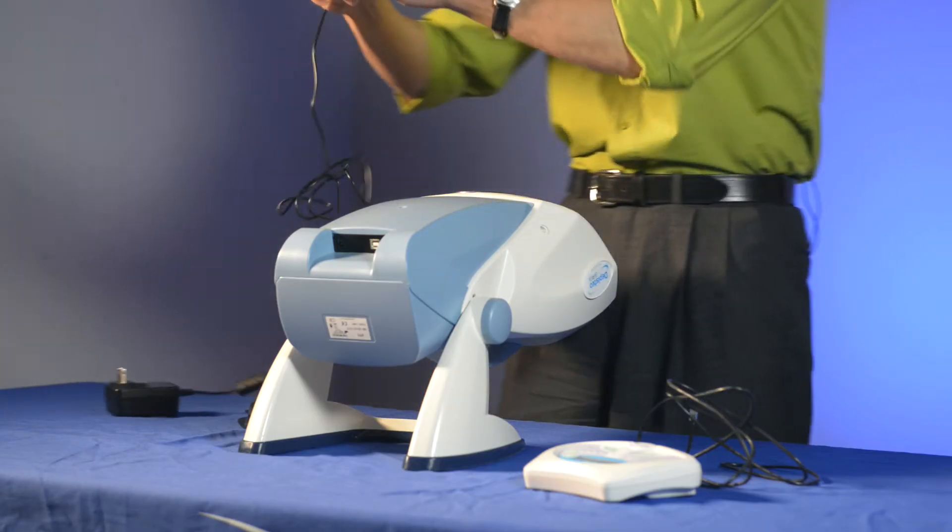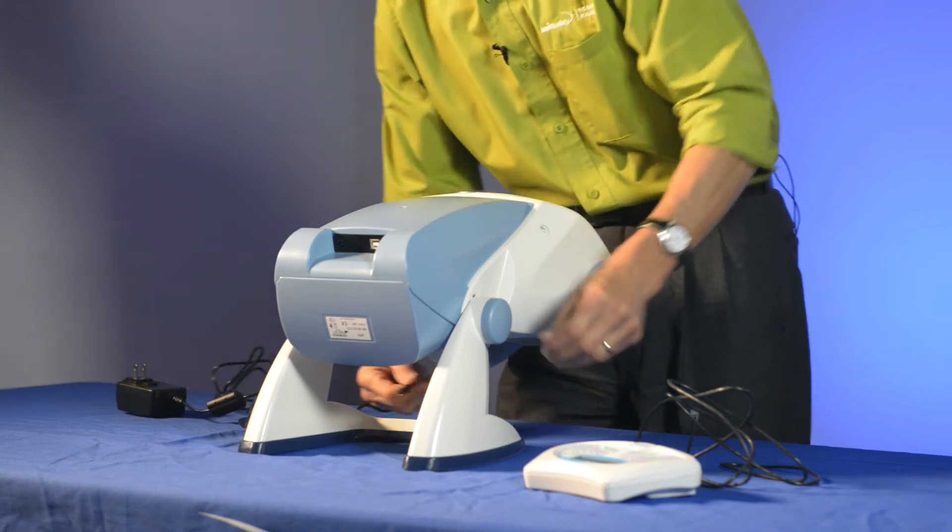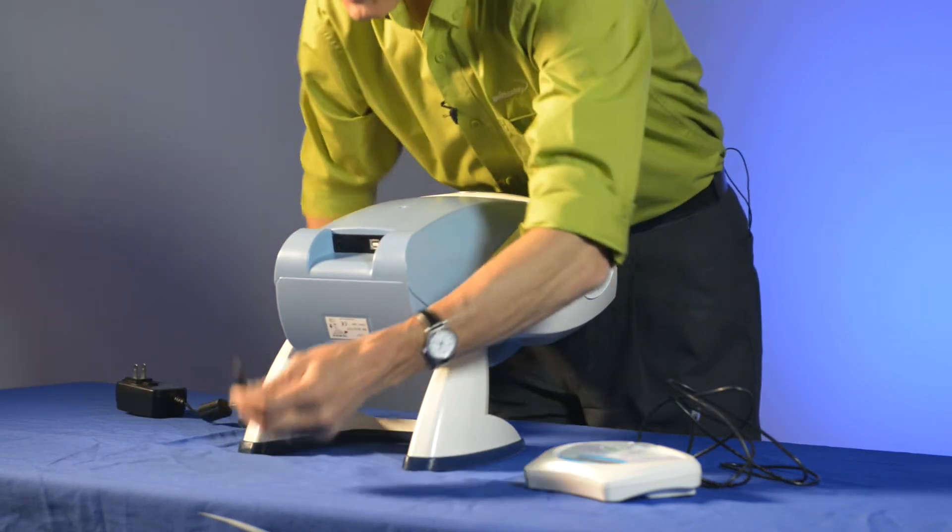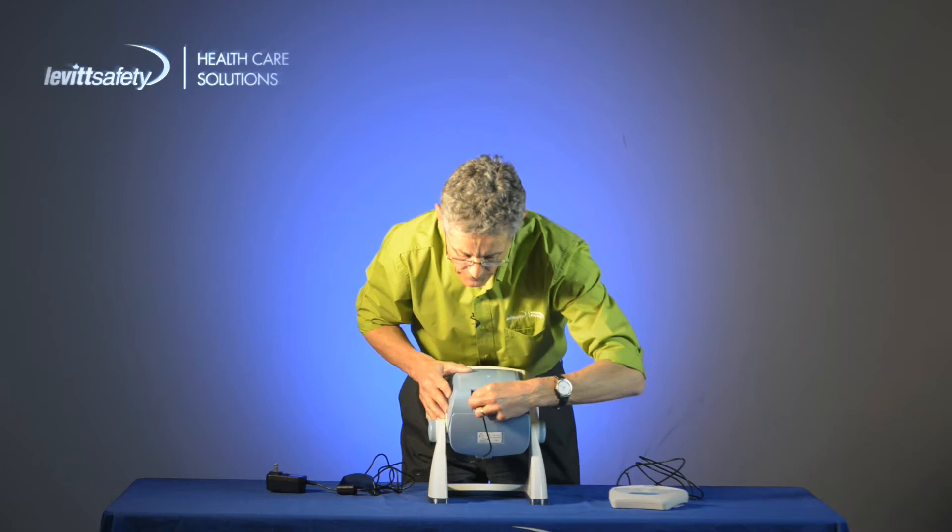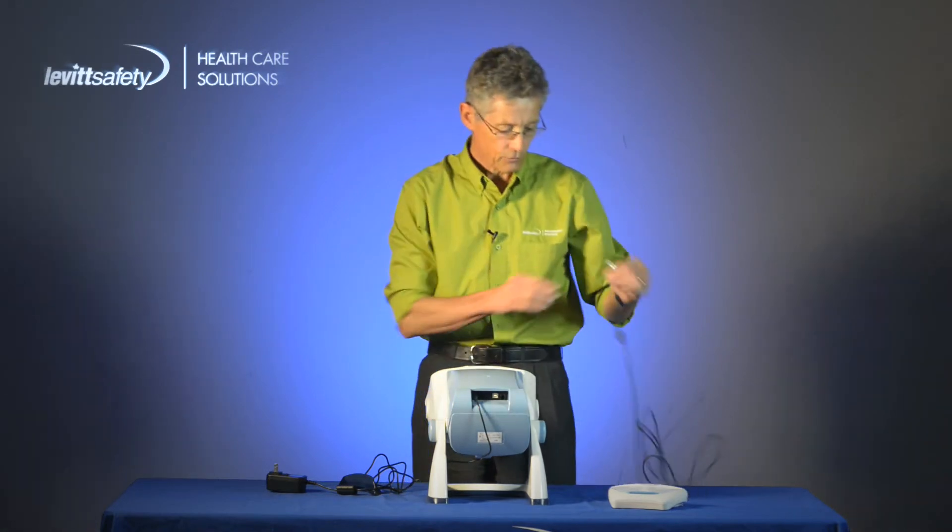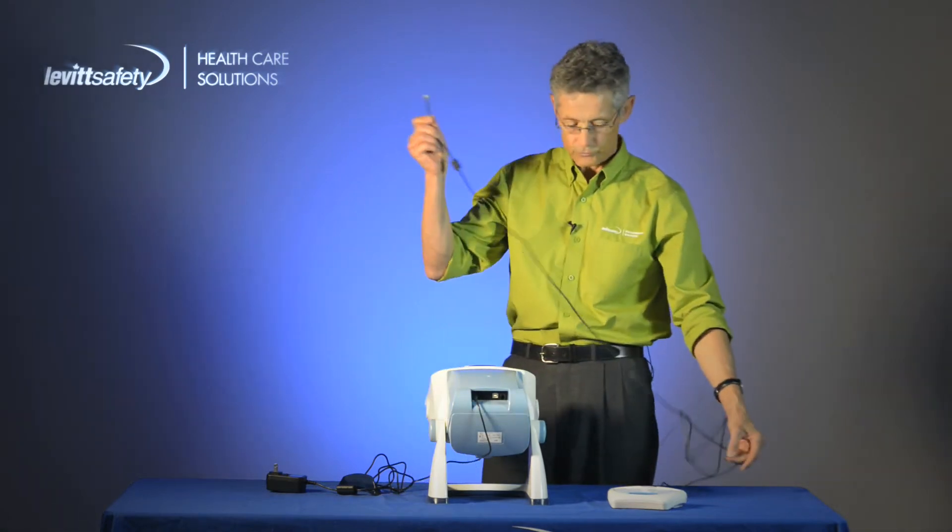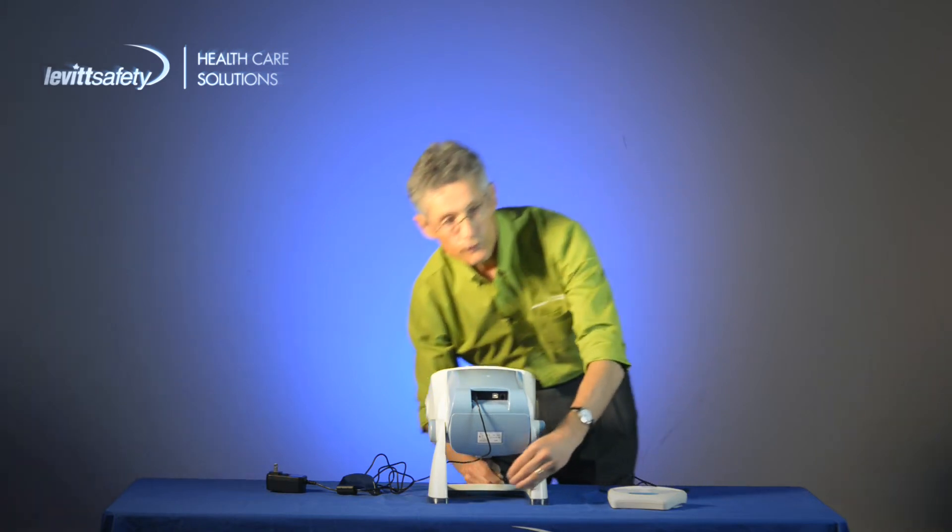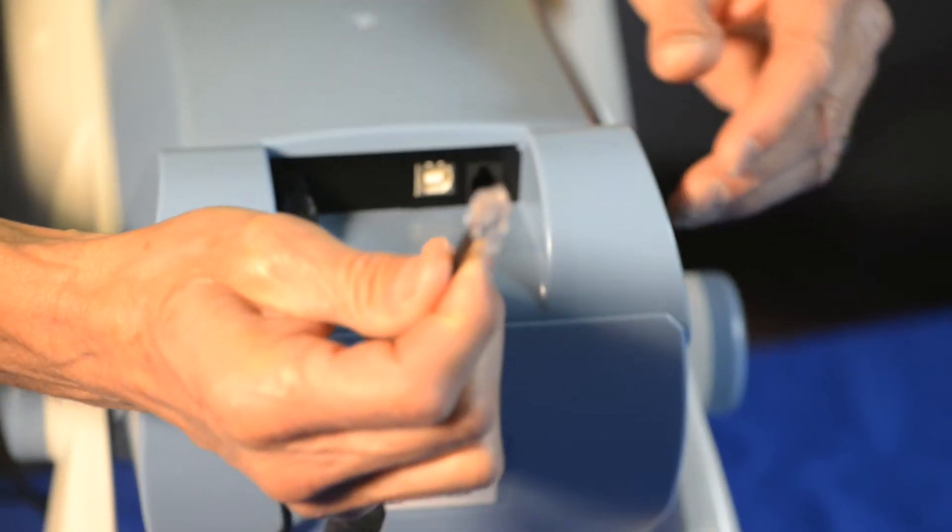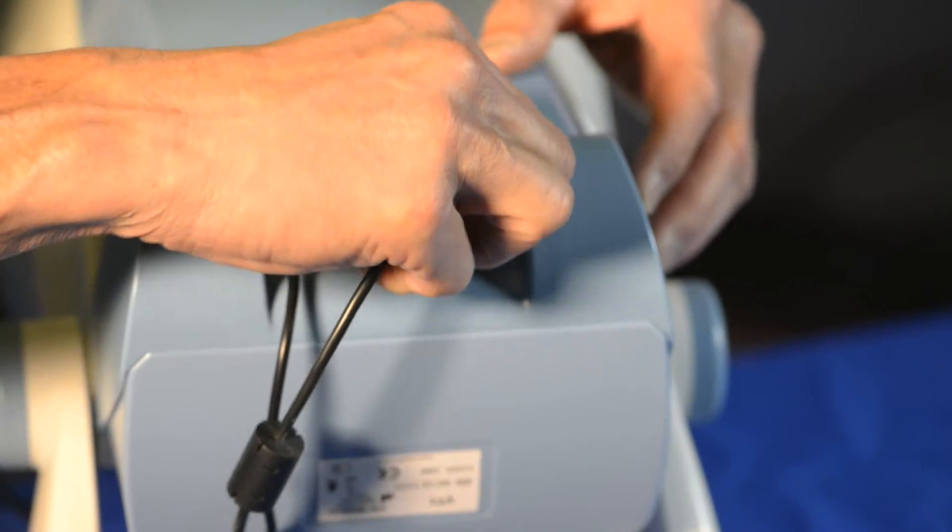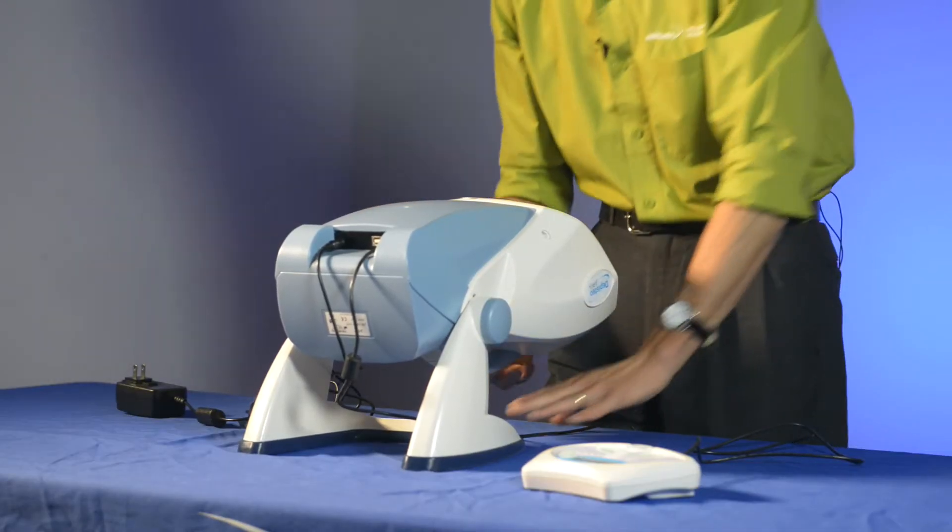Now we have to bring power to the Vision Screener as well as the remote control cable. So the AC power adapter will feed in from underneath to the front and it plugs into the AC plug. And the controller uses a telephone style jack, also feeds in underneath and plugs into the back as well. So now you've got your connections made.